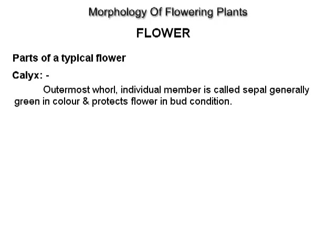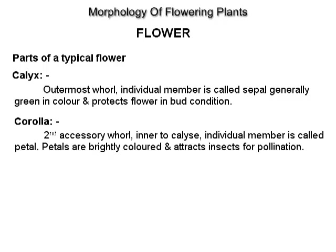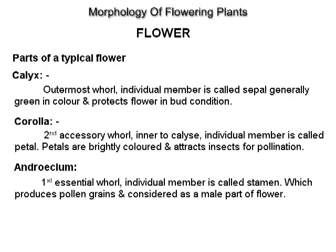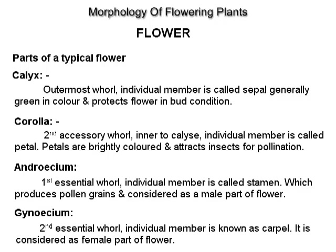Calyx: the outermost whorl; individual member is called a sepal. Generally green in color and protects the flower in bud condition. Corolla: second accessory whorl, inner to calyx; individual member is called a petal. Petals are brightly colored and attract insects for pollination. Androecium: first essential whorl; individual member is called a stamen, which produces pollen grains and is considered the male part of the flower. Gynoecium: second essential whorl; individual member is known as a carpel, considered the female part of the flower.